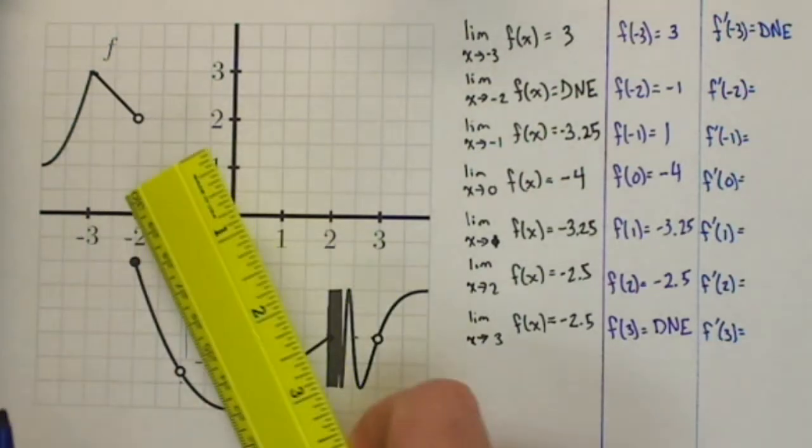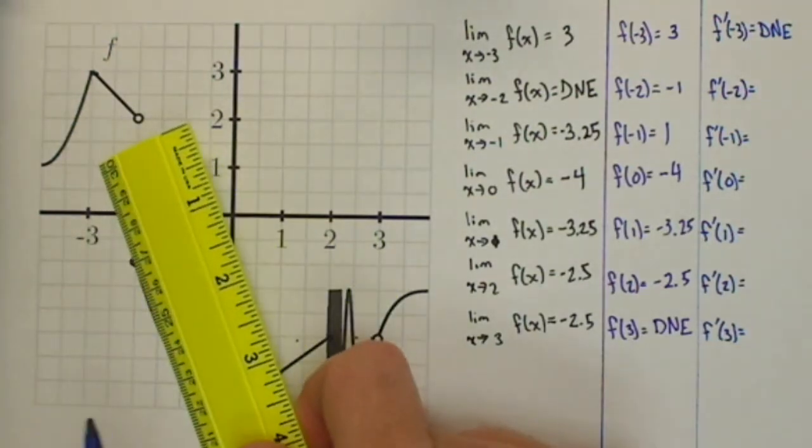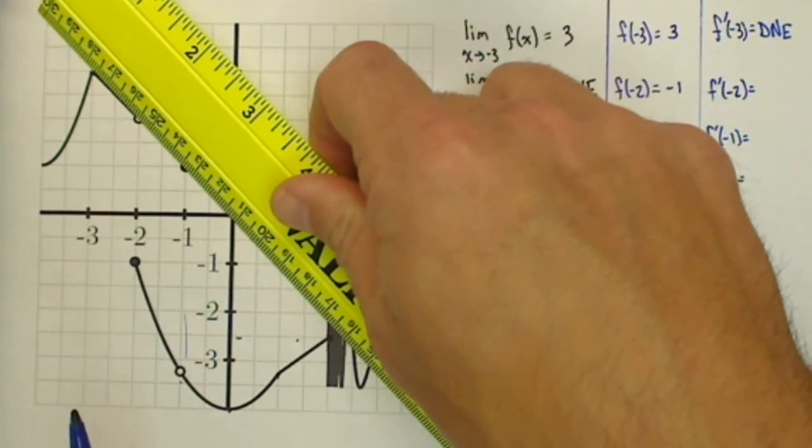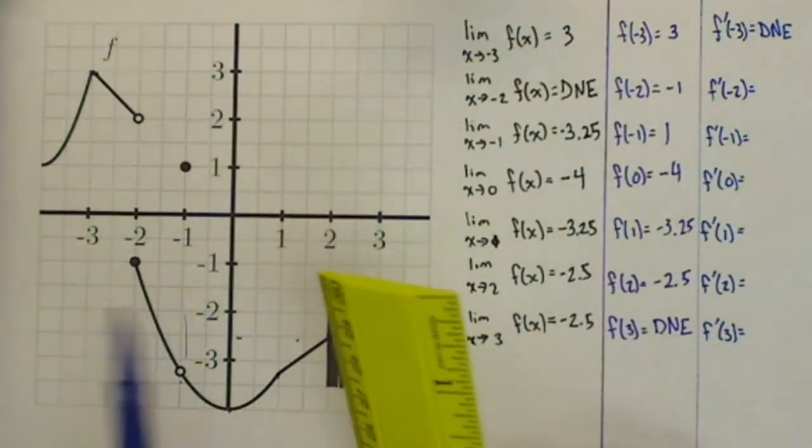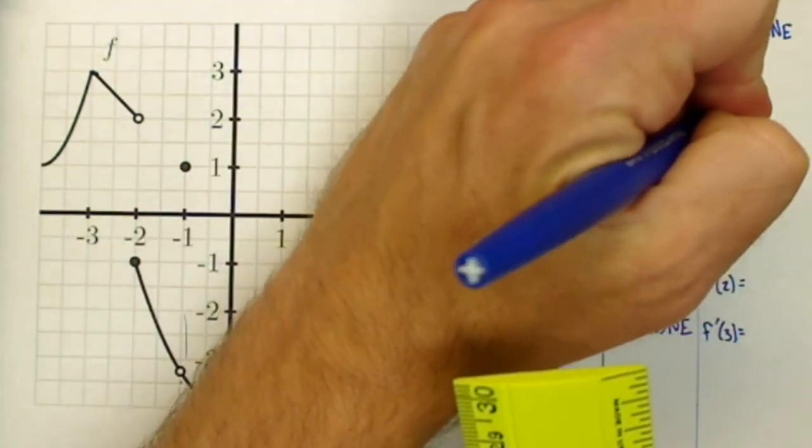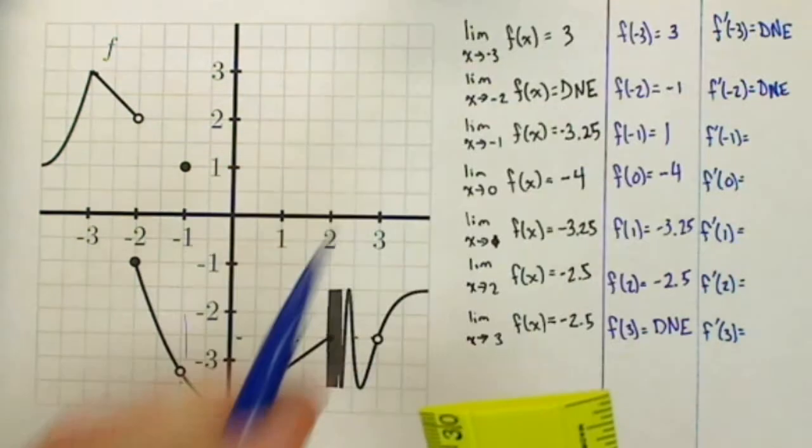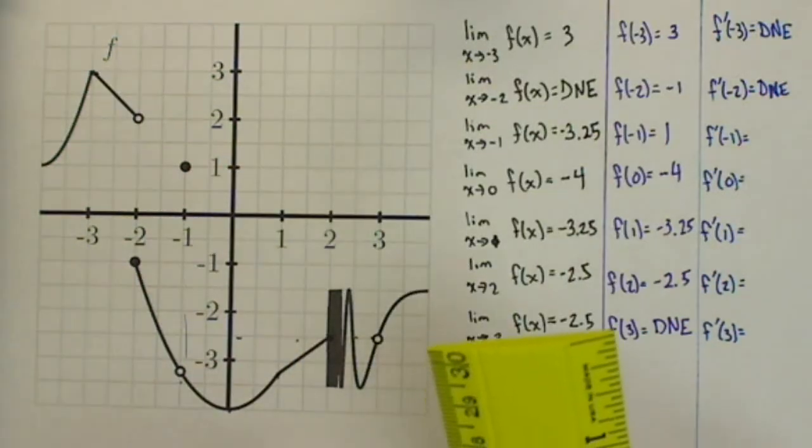At negative 2, well, we've got a tangent line down here, but we've also got a tangent line up here. We can't have two separate tangent lines at the same point. It's also going to be a place where the tangent line is not going to happen, so the derivative does not exist at that point.